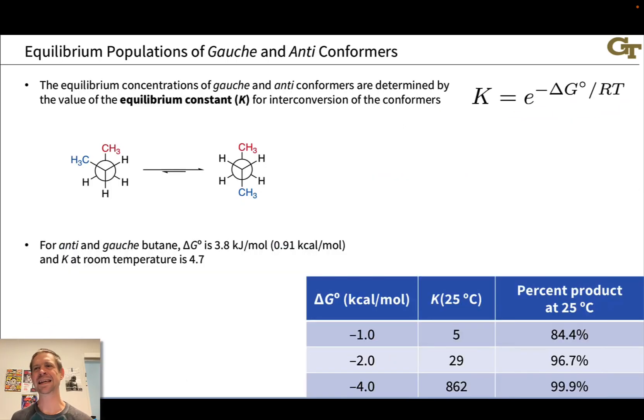If we want to think about the equilibrium amounts of, say, the staggered conformers, the gauche and anti-conformers for something like butane, well then we need to think about the relationship between the free energy difference between these conformers, which we've already seen, and the equilibrium constant, which is a measure of the ratio of, say, the product anti-conformer to the reactant gauche conformer at chemical equilibrium. And this relationship is one you've hopefully seen in your introductory course as well.